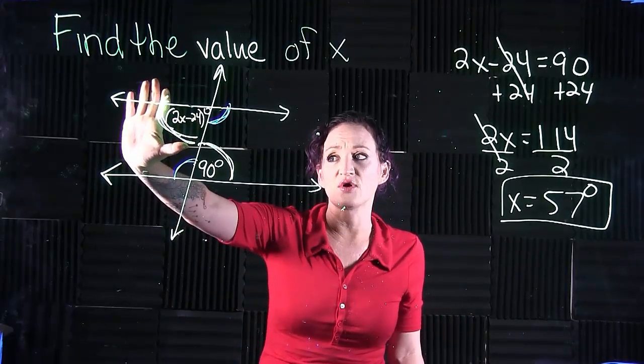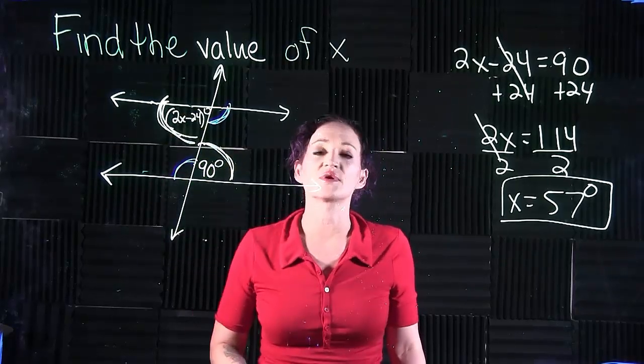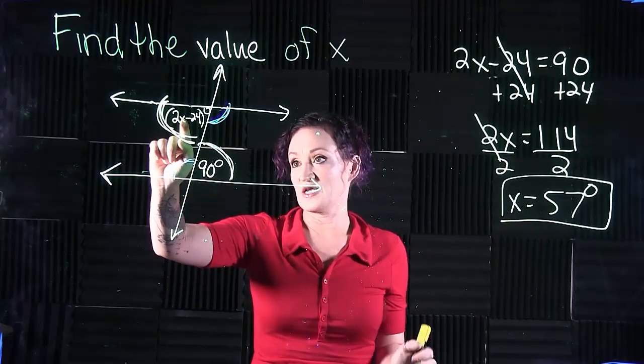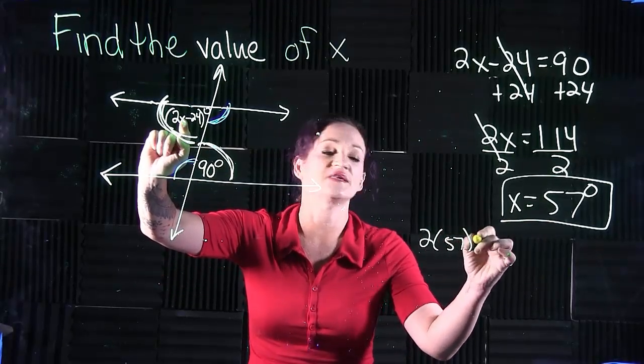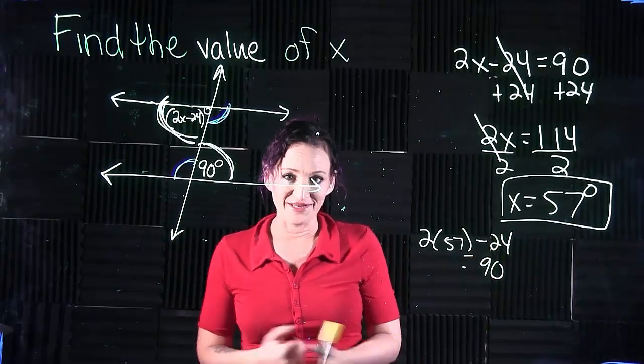If we want to find the actual angle value over here, which should equal 90—this is equal to 90, this is equal to 90—we can plug in 57 for x and do 2 times 57 minus 24, which also calculates to 90 degrees.